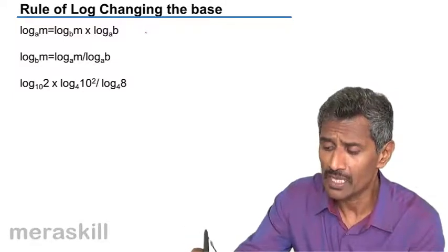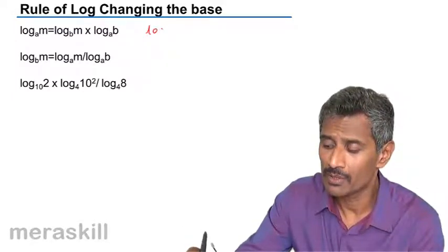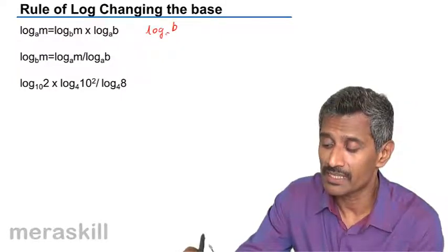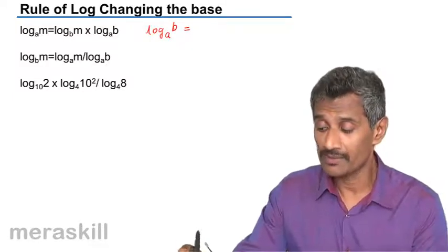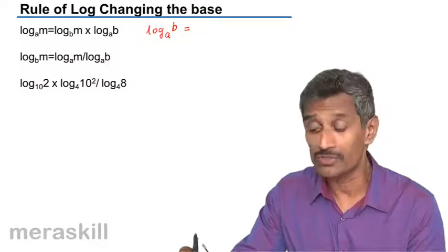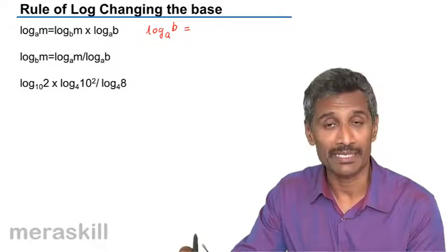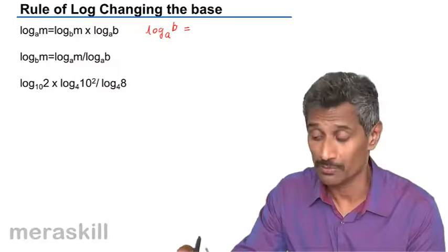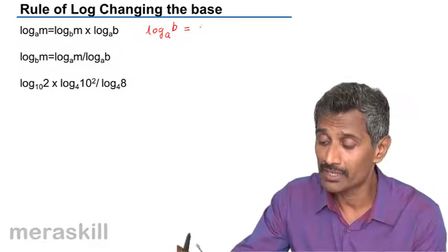Now suppose I have a term log B to the base A. Now I want to change the base to C. I cannot just write that as log B to the base C, because log B to the base C is not the same as log B to the base A as we have seen in the exponential process.